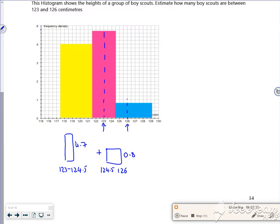So if I work out the area of those and add them together, so I've got, what's it going to be, a 4.7 times 1.5 plus 0.8 times 1.5. So that gives me a frequency of 8.25.